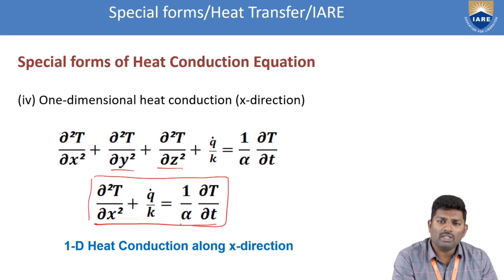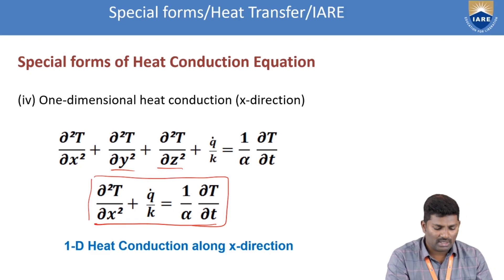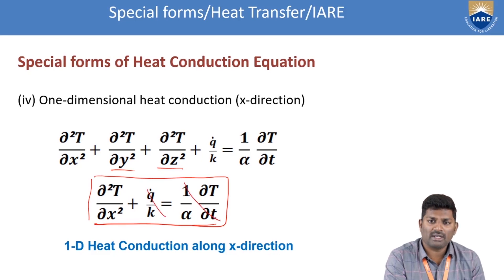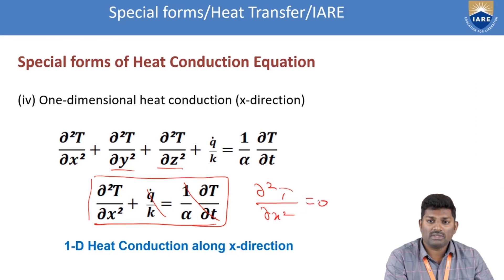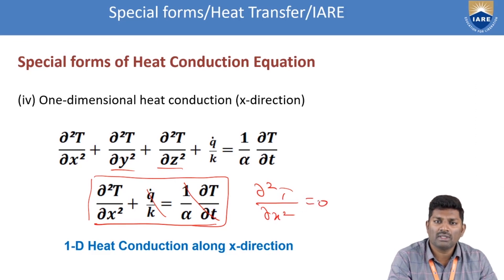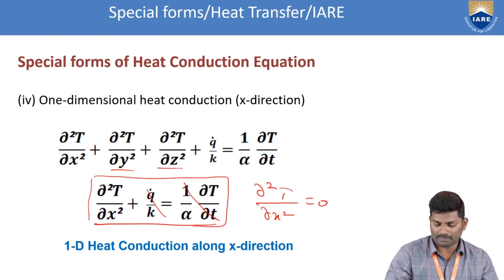If you want to write the one-dimensional equation with steady state condition and no heat source, those terms are neglected and only ∂²T/∂x² = 0 remains. This is called the heat conduction equation along one dimension with steady state and no heat source.